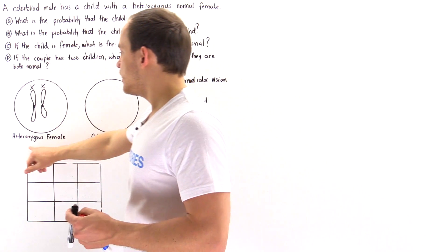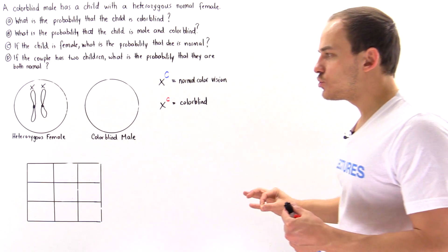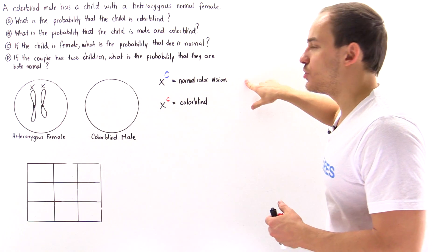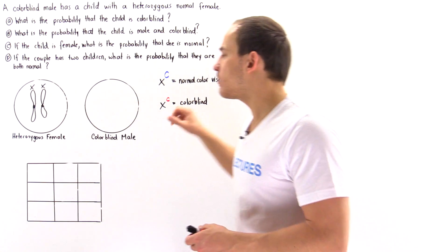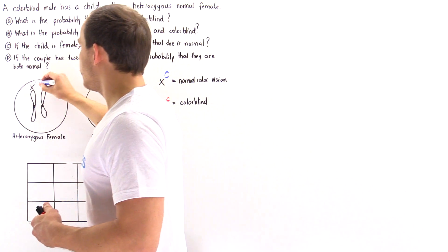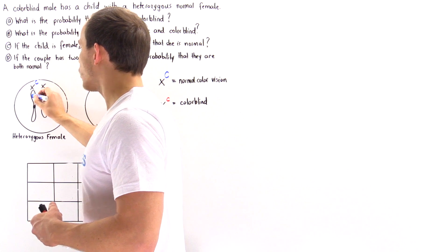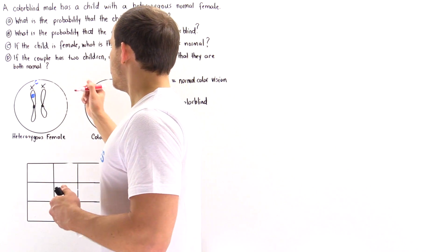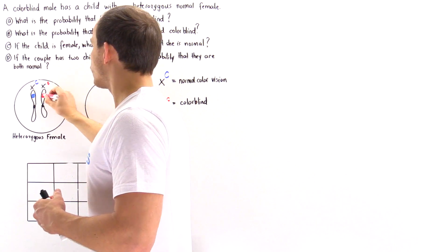Because we're dealing with a heterozygous female, one X chromosome carries the normal gene and the other carries the colorblind gene. So one will be uppercase C — let's fill this in as blue — and the other will be lowercase c, drawn in red.